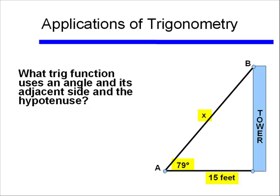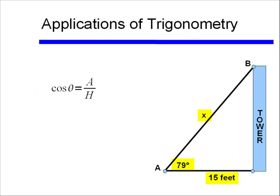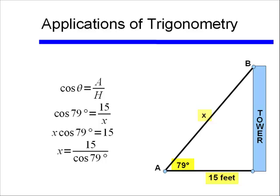So what trig function will I use if I have an angle and an adjacent side and the hypotenuse? Well that will be my cosine, because cosine of an angle theta is equal to the adjacent side over the hypotenuse. And in this case, I have the cosine of 79 degrees is equal to my adjacent side 15 divided by x, the hypotenuse.